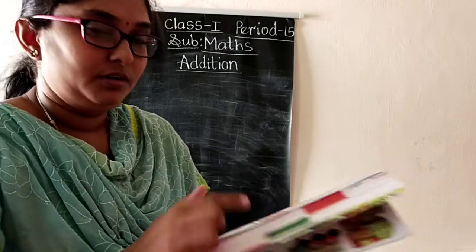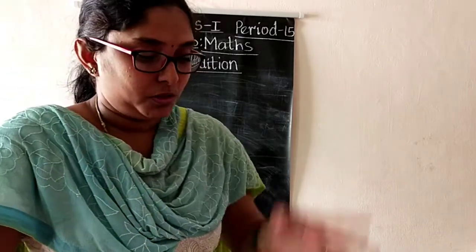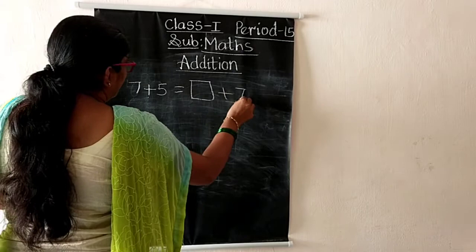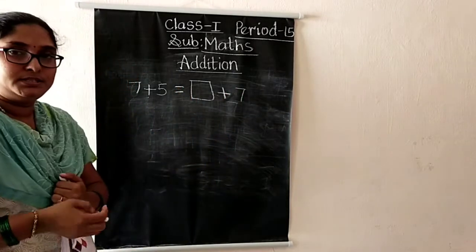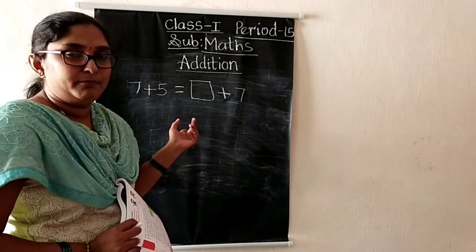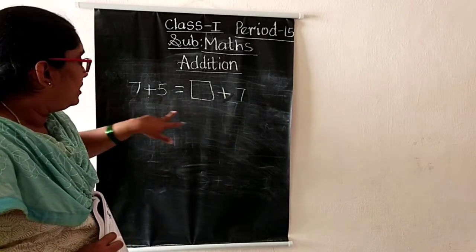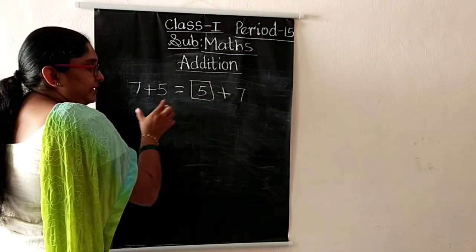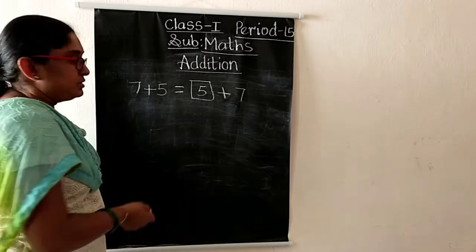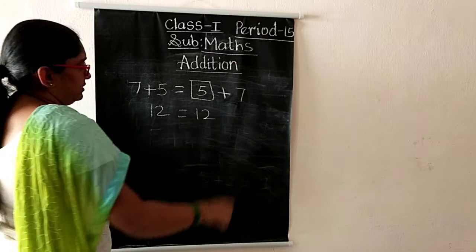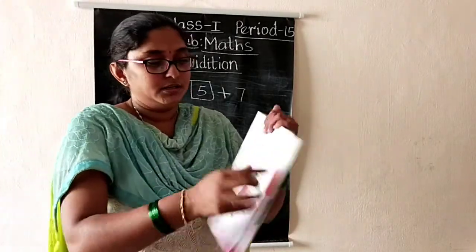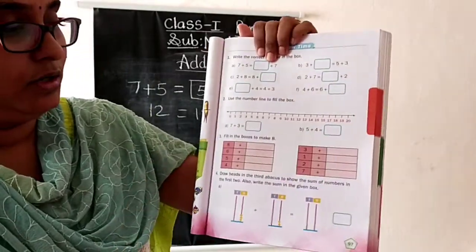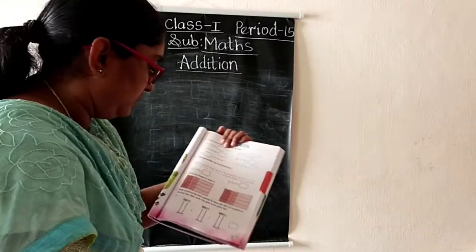Next, page number 97. Write the correct number in the box. We already discussed: five plus five equals dash plus seven. If you add any two numbers, the answer will be the same regardless of order. Here the two numbers are seven and five, and only seven is given, so five should come in the box. Next: three plus dash equals five plus three. What will come here? Five.